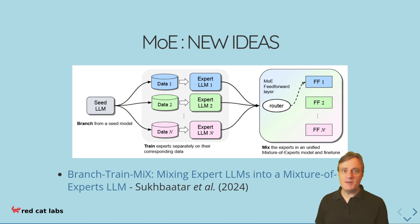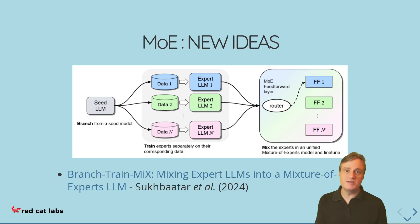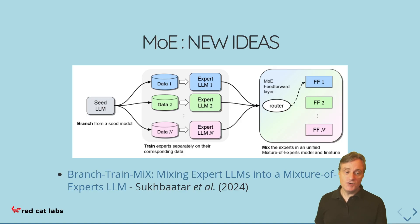In the intro, I described how people were trying to make these experts behave in a more human way. In the Branch-Train-Mix paper, they essentially try to do this by starting off with a seed LLM, then splitting it into experts which are trained on different datasets. Because they all branch from this seed model, they all agree on the basics of handling text — such as tokens and attention mechanisms. After individual training, you bring them together with a router, and now you've accomplished something closer to how people think about real experts.